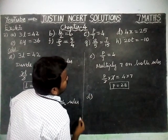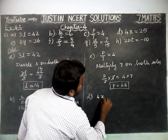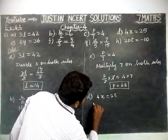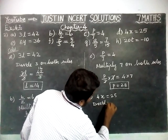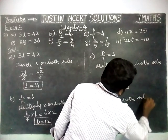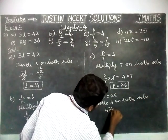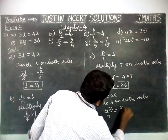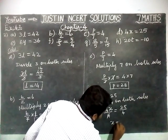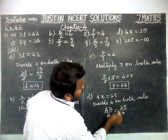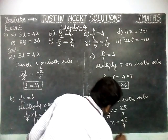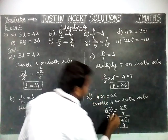Next, part D. 4x is equal to 25. Here, the number is in the multiplication, so we have to divide. Divide 4 on both sides. 4x divided by 4 is equal to 25 divided by 4. The 4s get cancelled. x is equal to 25 divided by 4. We cannot divide it without a remainder, so we are keeping it as is: x equals 25 divided by 4.